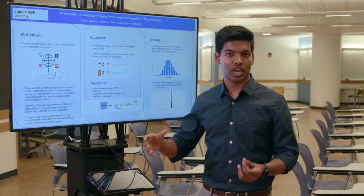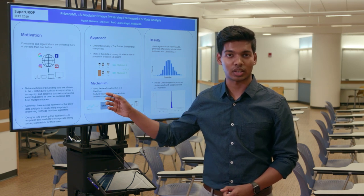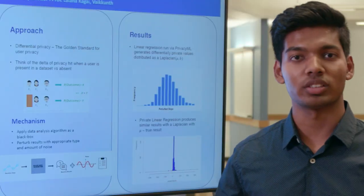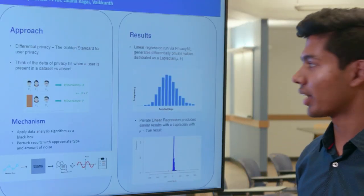These techniques over time have been shown to not be very effective and in fact are quite easily breakable. The gold standard for privacy is something called differential privacy.